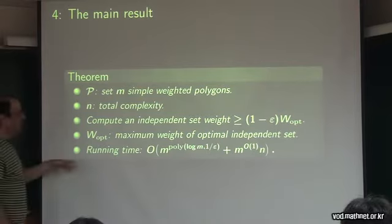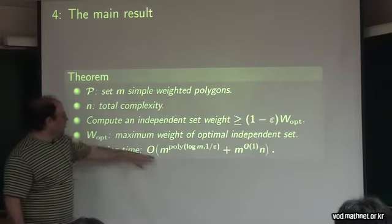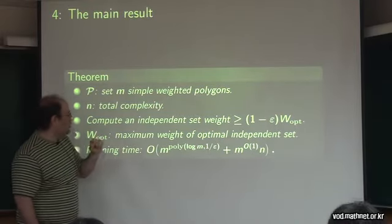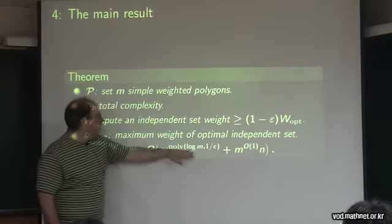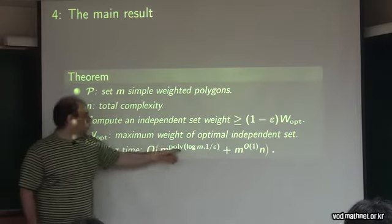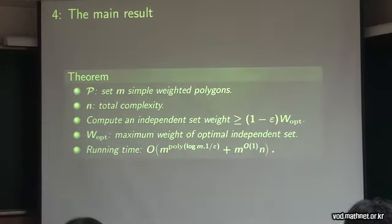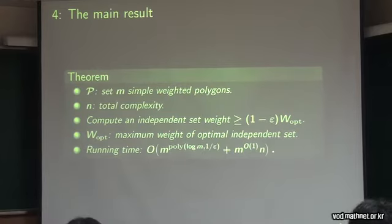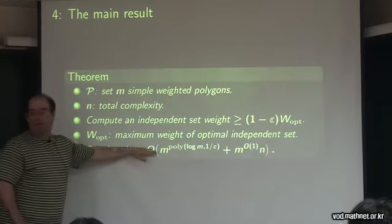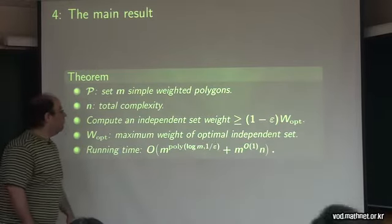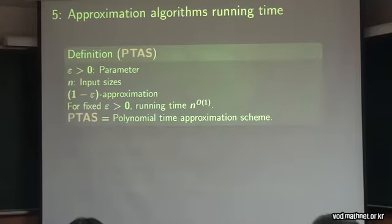And the running time is this monstrosity. It's m to the power of a polynomial, but the polynomial is a polynomial of log n and 1 over epsilon. This is called quasi-polynomial running time, and I will speak more about this shortly.